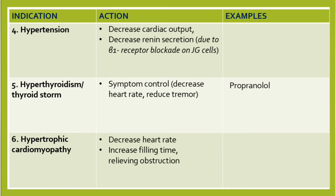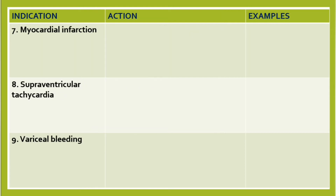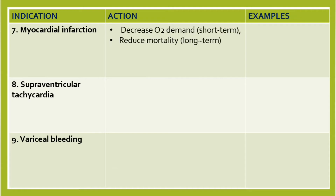The seventh indication is myocardial infarction. Beta blockers decrease oxygen demand — that is the short-term effect — and the long-term effect is reducing mortality.